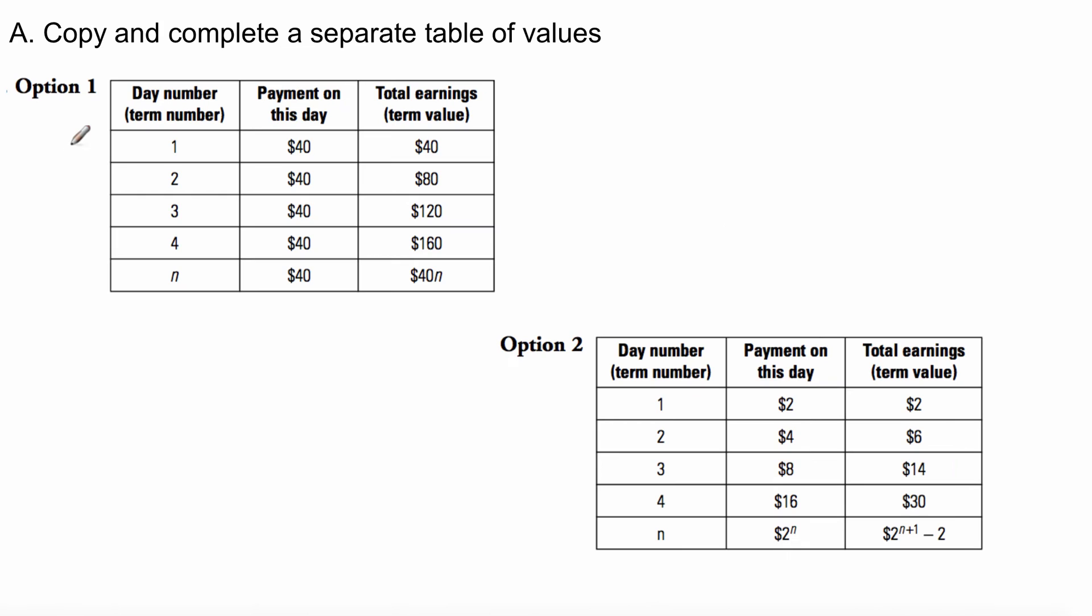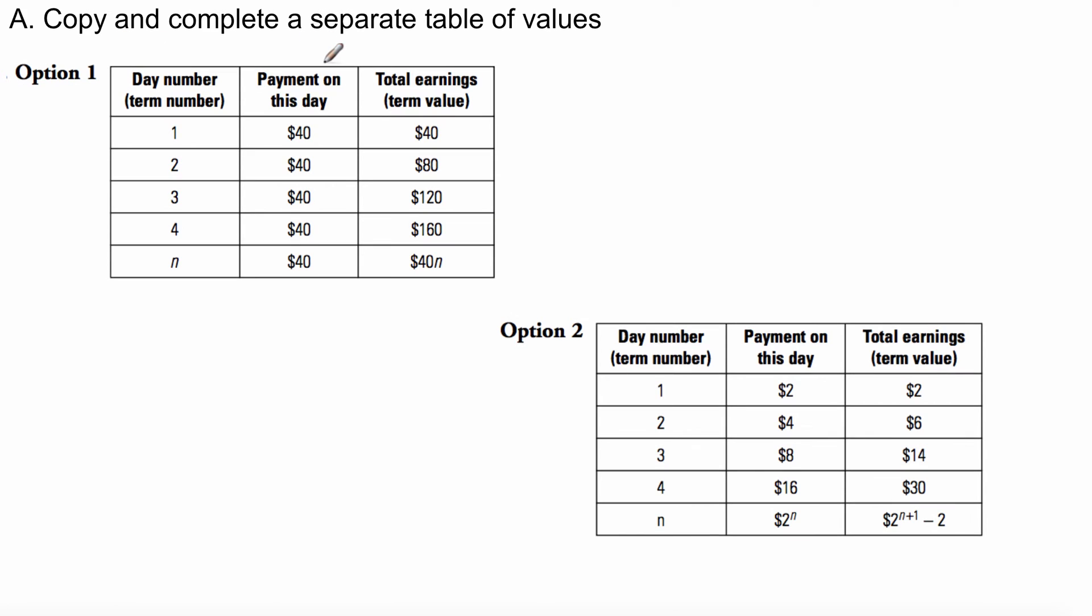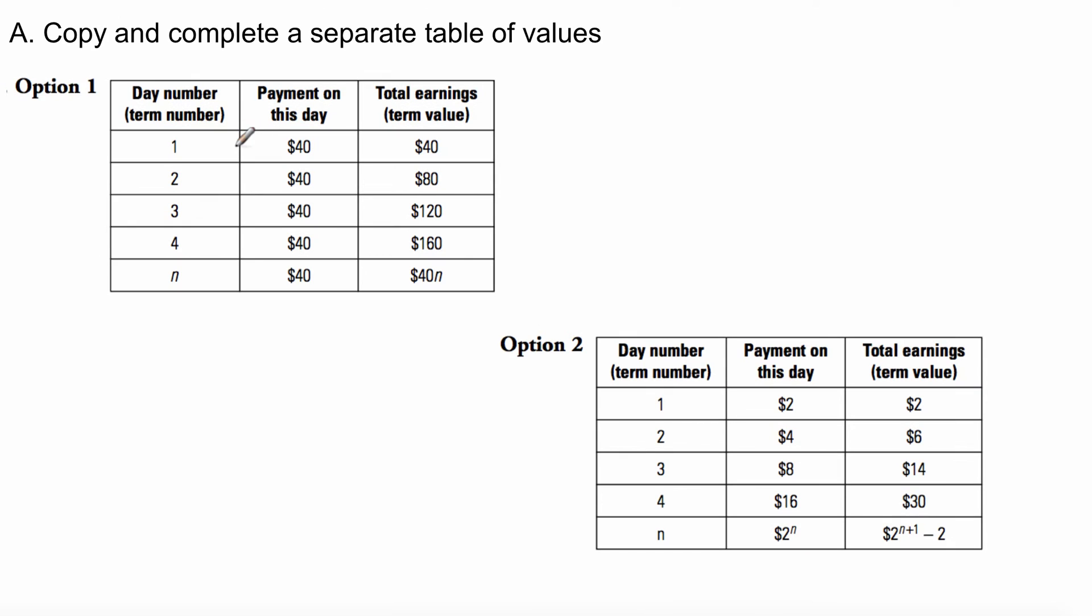Your textbook is asking you to copy and complete a separate table of values for each option. So option one, you can see first day he's making $40, second day he's making $80. So, it's increasing by $40 each day. These are only four days. You are asked to complete them. So, if you need to pause, do that. I will wait.